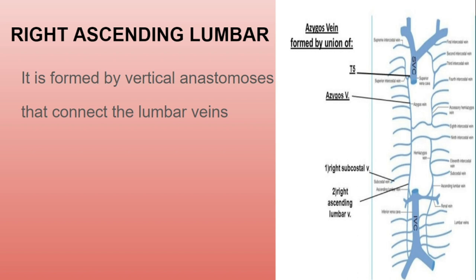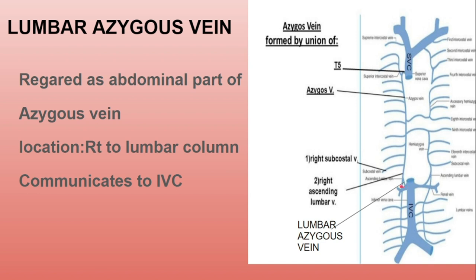The lumbar azygous vein is regarded as the abdominal part of the azygous vein. It is located to the right of the lumbar vertebra, and its lower end communicates with the inferior vena cava.